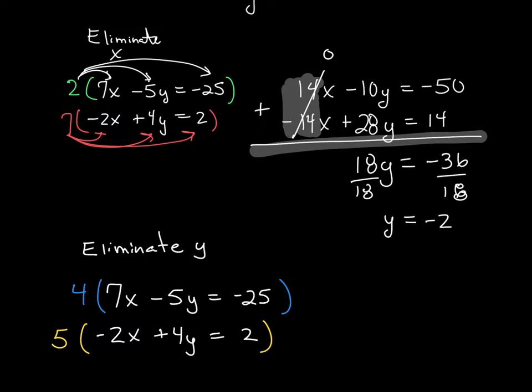When I multiply the top one, I distribute the 4 to all 3 parts. I have 28x minus 20y equals negative 100.